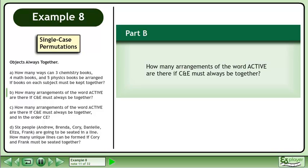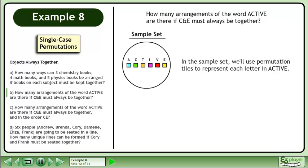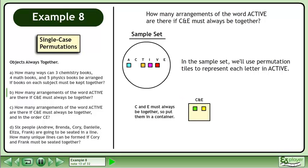Now we'll move on to Part B. How many arrangements of the word ACTIVE are there if C and E must always be together? In this sample set, we'll use permutation tiles to represent each letter in ACTIVE. C and E must always be together, so put them in a container.